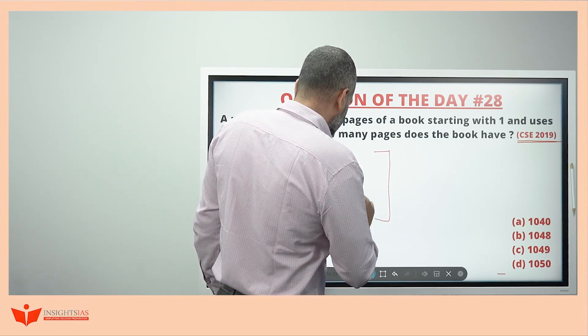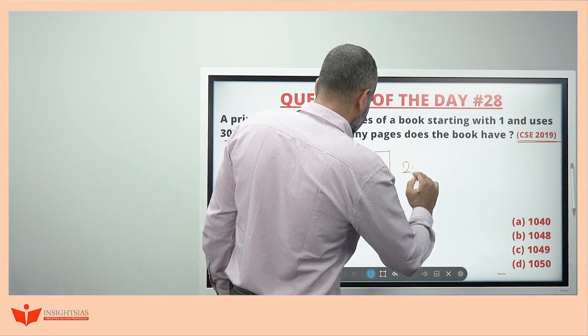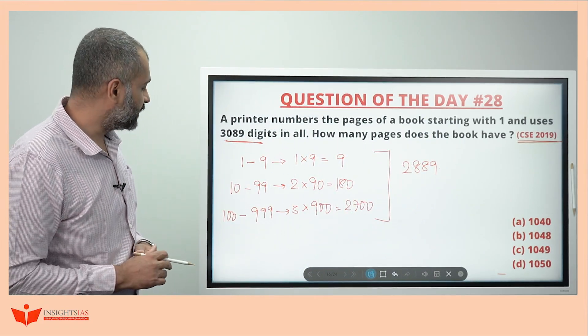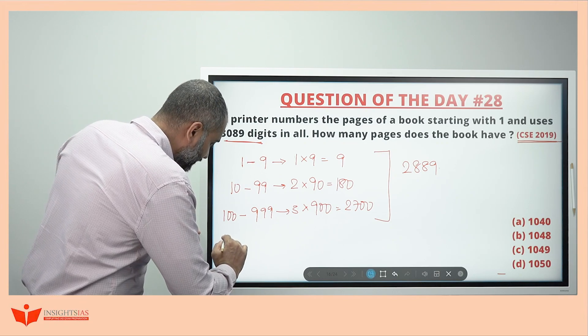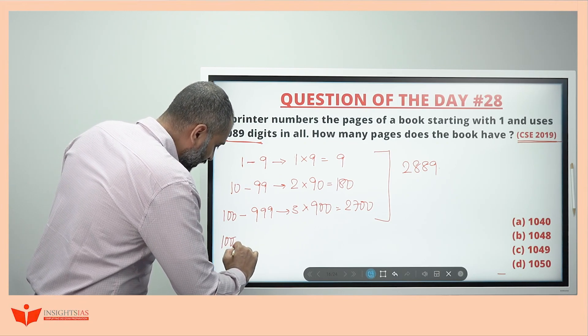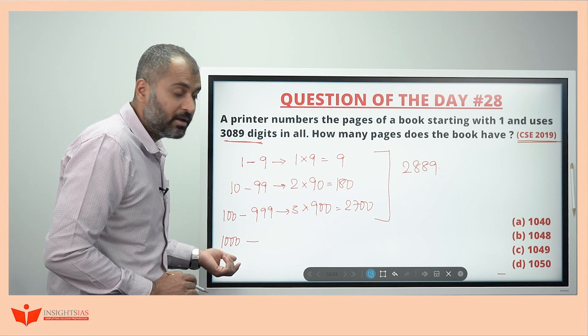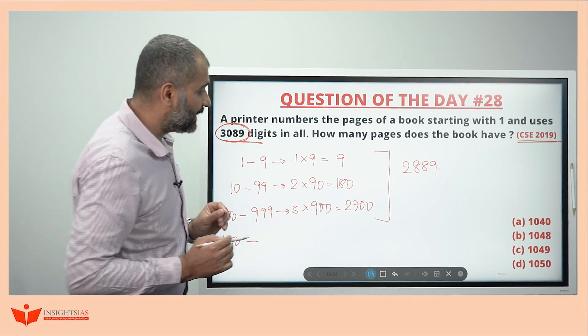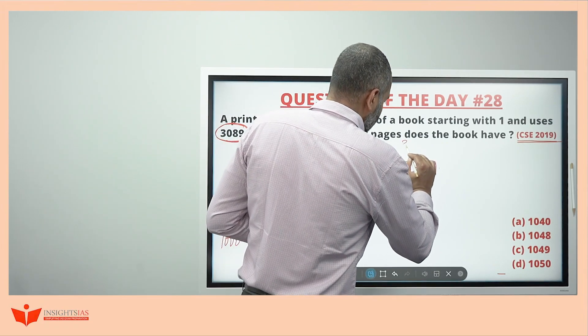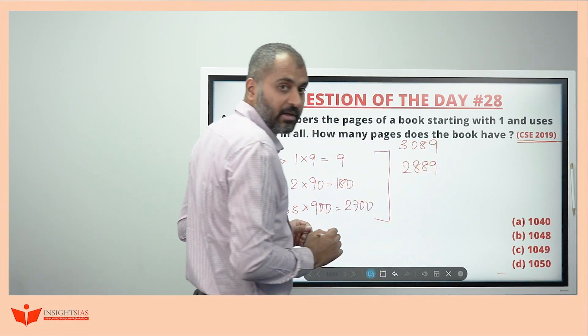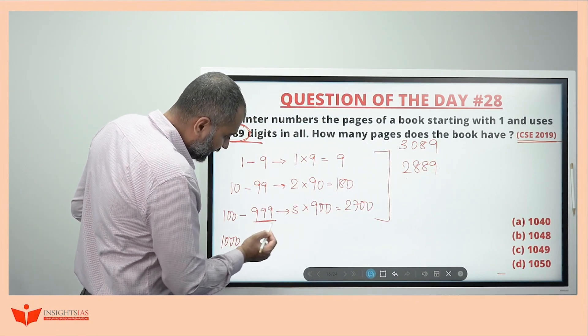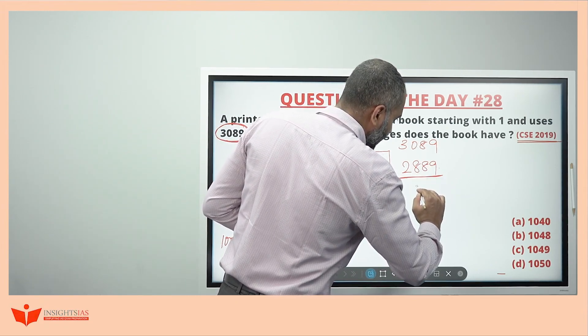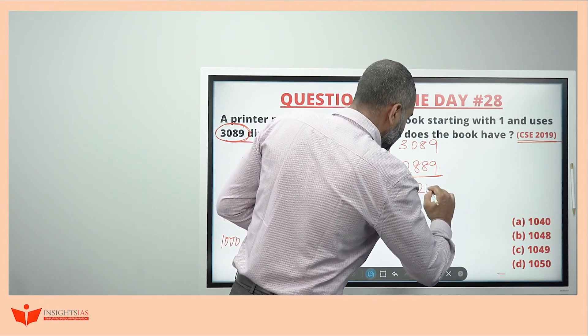So till here, how many printed? 2889 digits are printed. After this one is from 1000 onwards, it is 4 digit number. How many 4 digit numbers? Look here, 3089 digits are printed totally. So till here, till here means 999th page, 2889 digits are printed. So remaining how many has to be printed? This is nothing but 200 digits has to be printed.